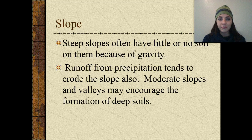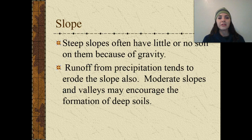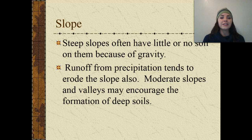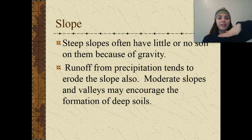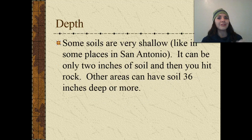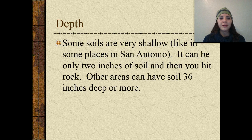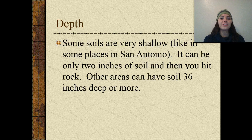Different types of slopes can also affect soil. Steep slopes often have very little to no soil because of gravity and constant erosion, and runoff from precipitation also erodes them. Moderate slopes, however, tend to have valleys that encourage the formation of very deep soils. Some soils are extremely shallow — in parts of San Antonio, there can be only about 2 inches before you hit rock — while other areas can have over 3 feet of soil.